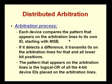The arbitration process works as follows: each device compares the pattern on the arbitration lines with its own ID starting from the MSB. If it detects a difference at a particular bit position, it transmits 0s on the arbitration lines from that position onwards for all lower bit positions as well. The pattern that appears is the logical OR of whatever each device is putting out. The device whose ID matches the arbitration line pattern is said to win the bus and get access.